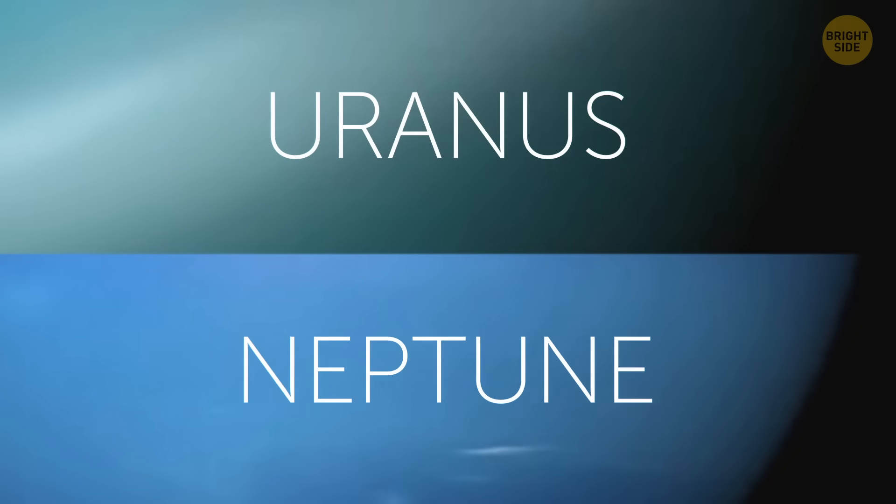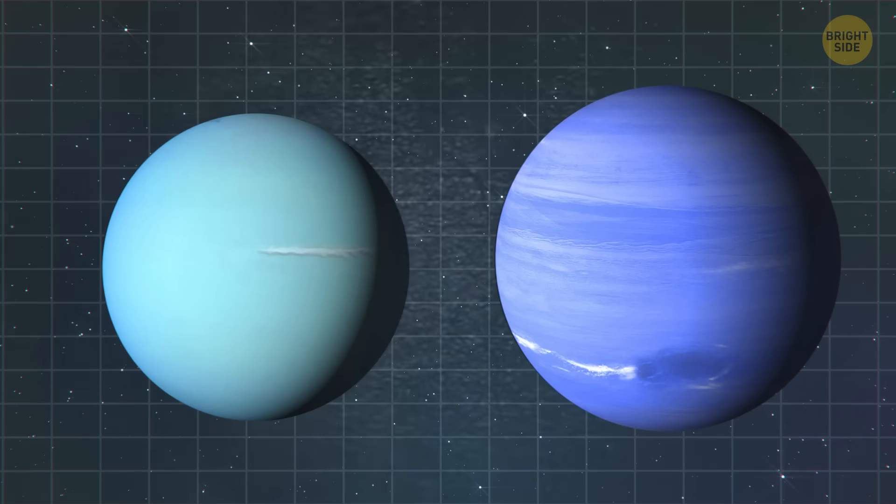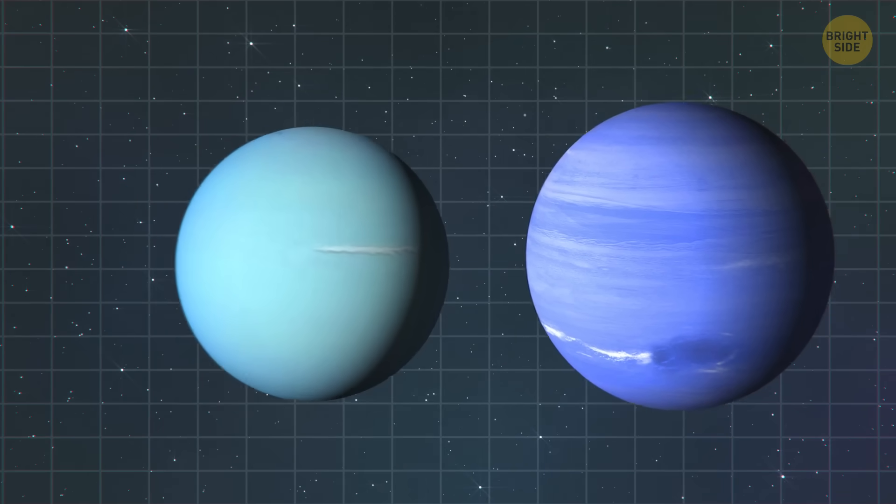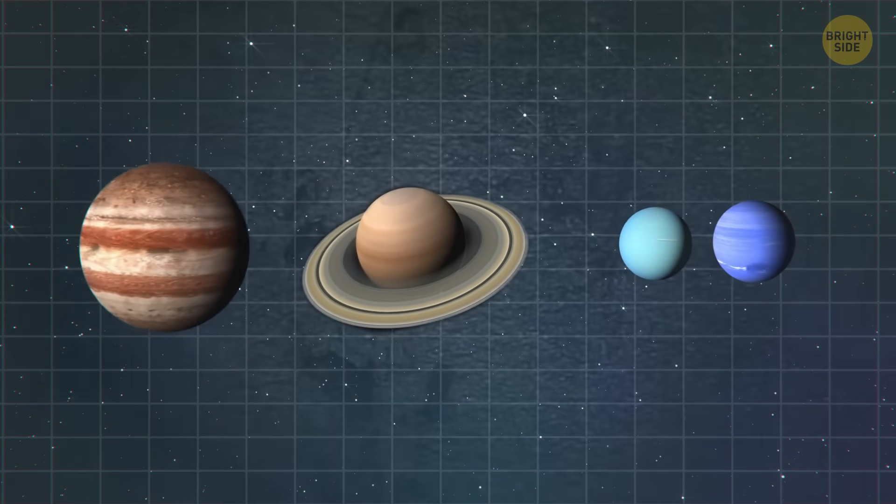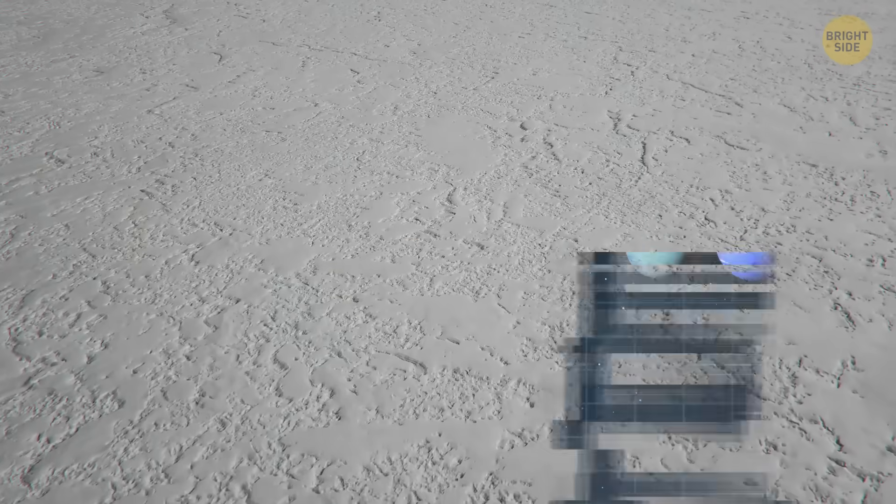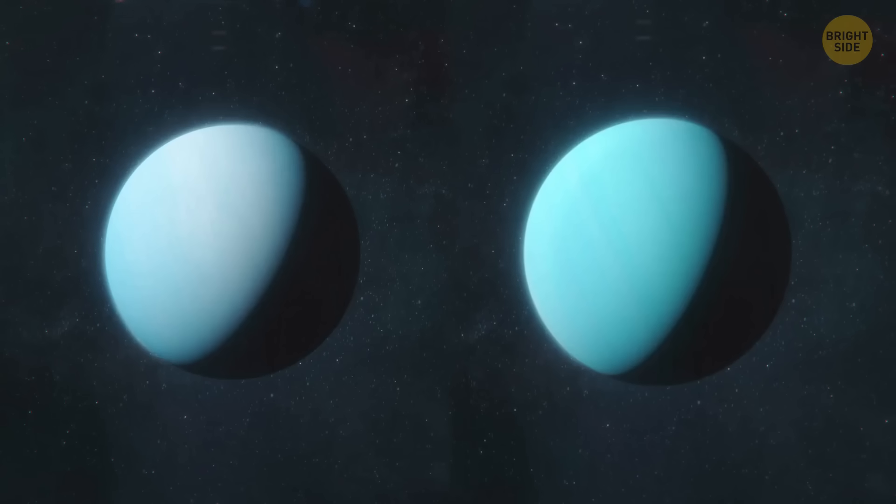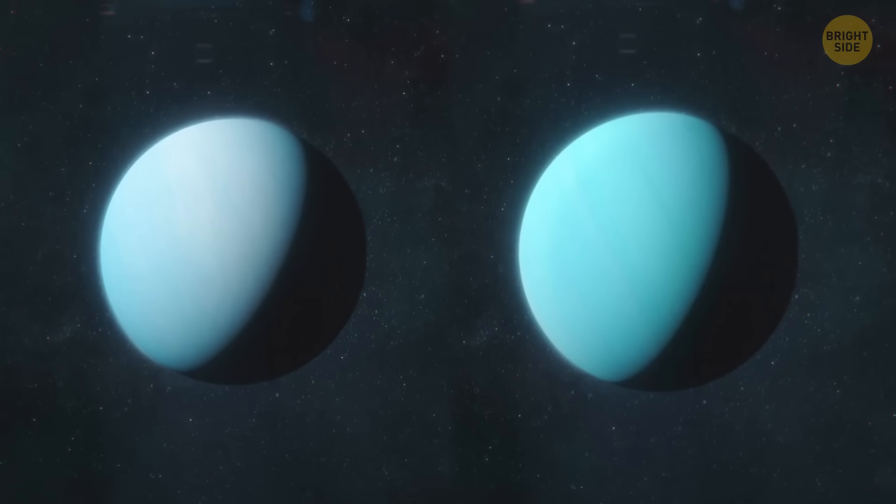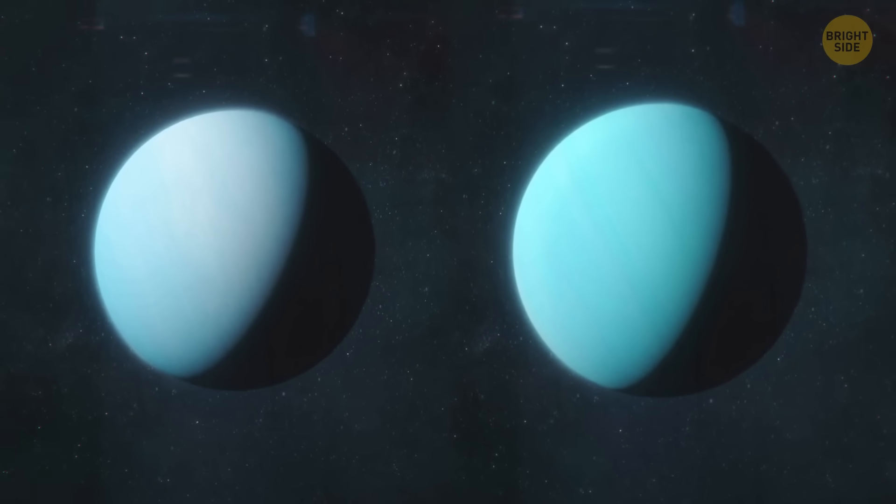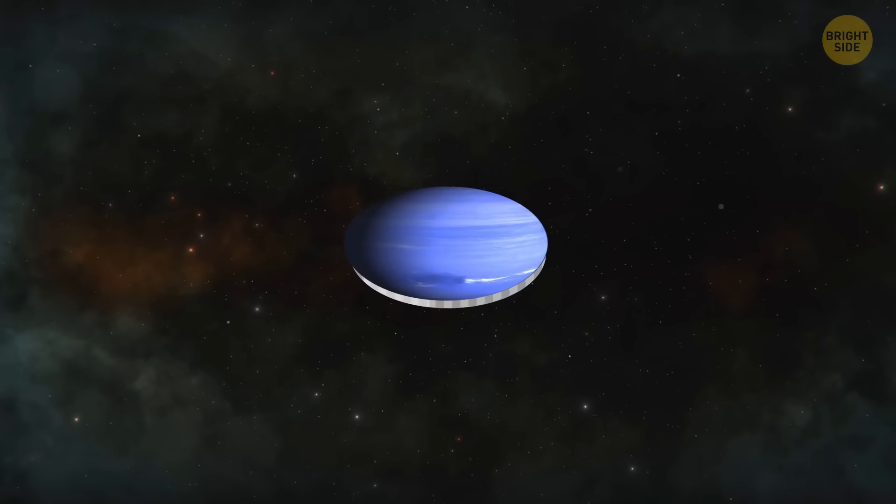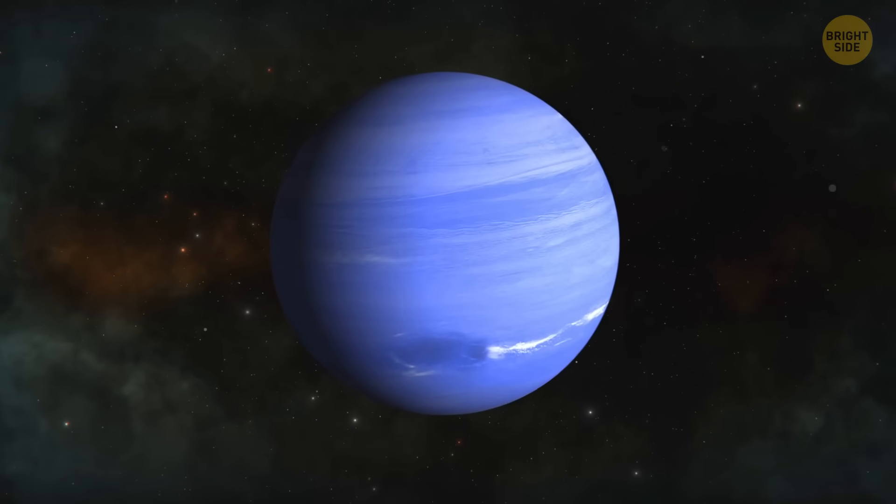Both Uranus and Neptune are ice giants. These planets are of the same size, larger than Earth, but smaller than Saturn and Jupiter. They both have icy interiors, deep atmospheres, and similar color. Very beautiful bluish-green. If either of these planets replaced the moon, the consequences would be the same. So let's flip a coin. Okay, it would be Neptune you'd see in the sky one day.